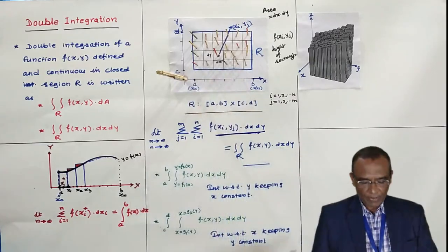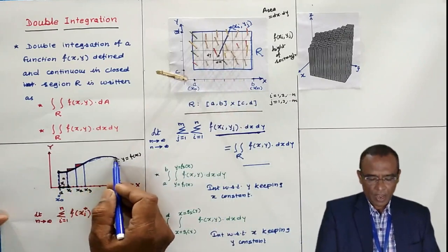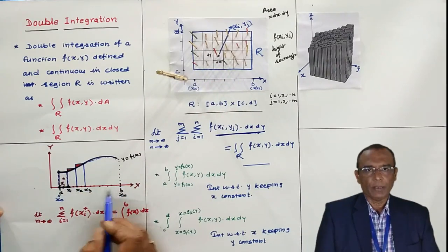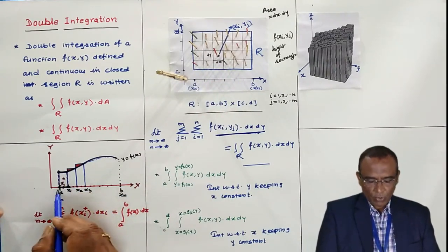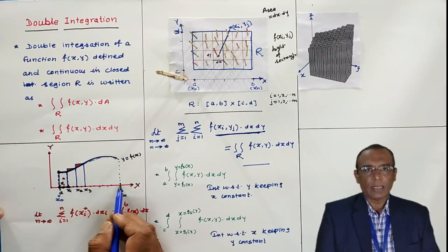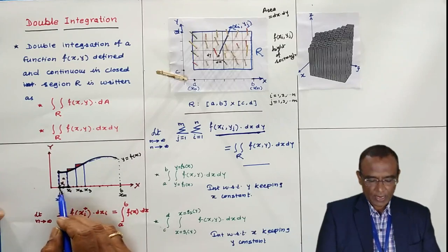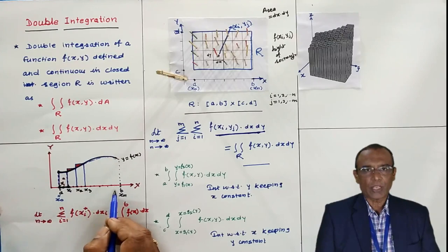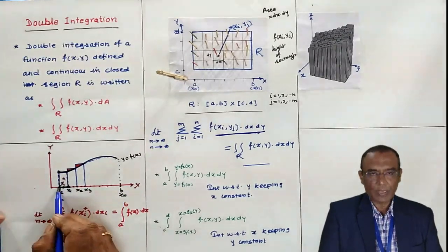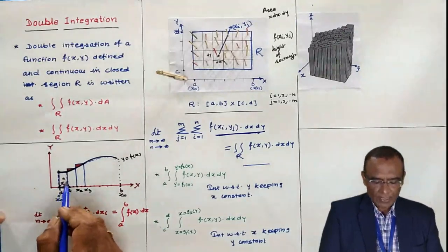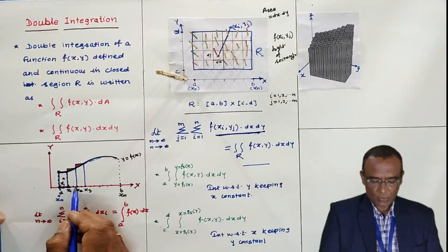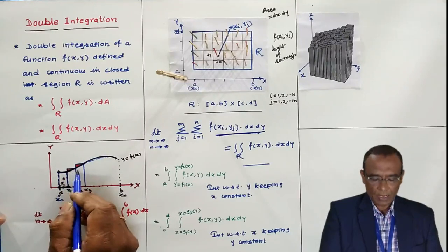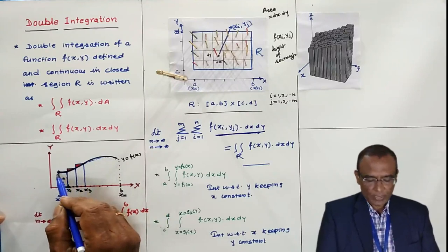Before going to the double integral, I would like to explain the single integral and its geometrical interpretation. The function f(x) is defined in the closed interval [a, b]. I am going to divide this interval a, b into n parts by putting points x1, x2, x3 up to x(n-1), where the last point is xn. I erect rectangles between consecutive points. What I am going to calculate is the area under this curve.